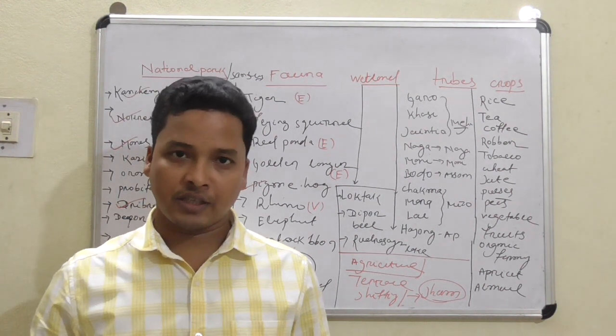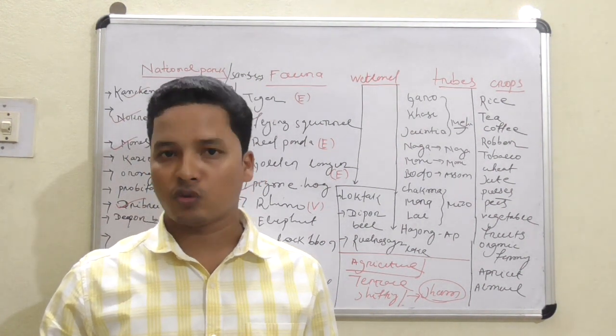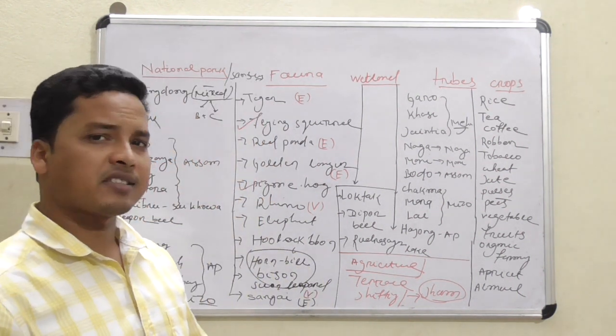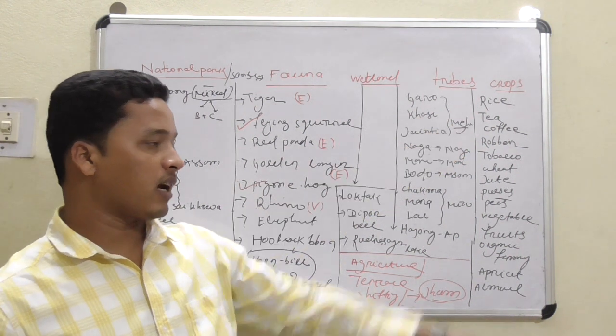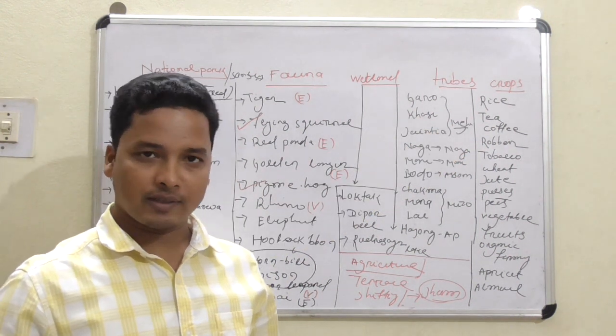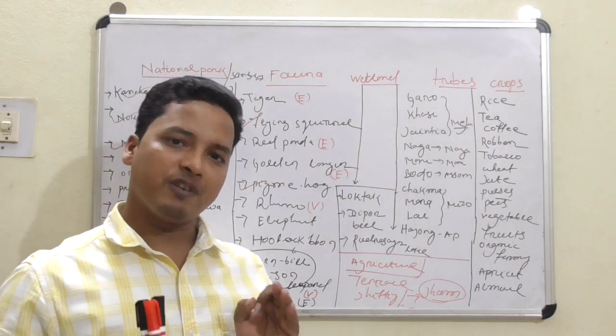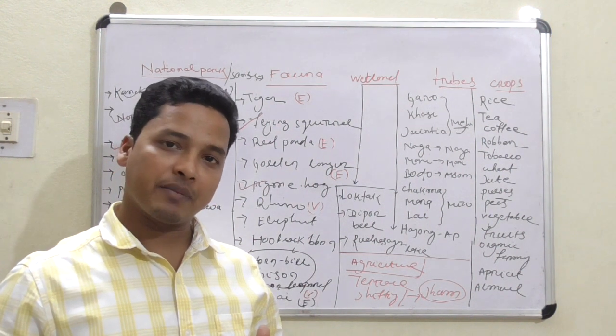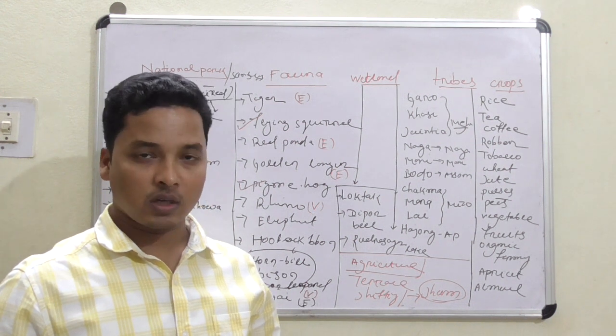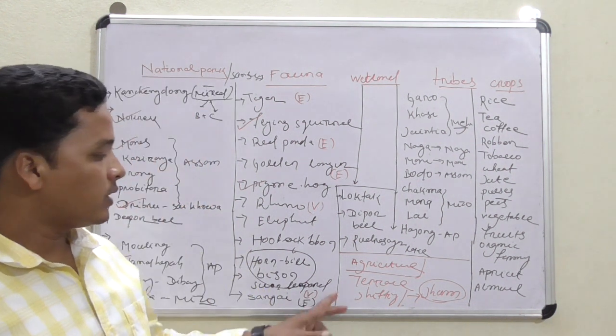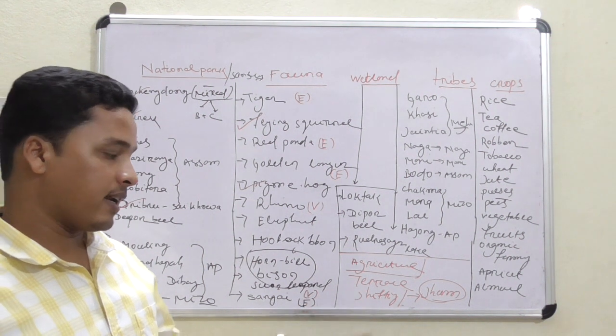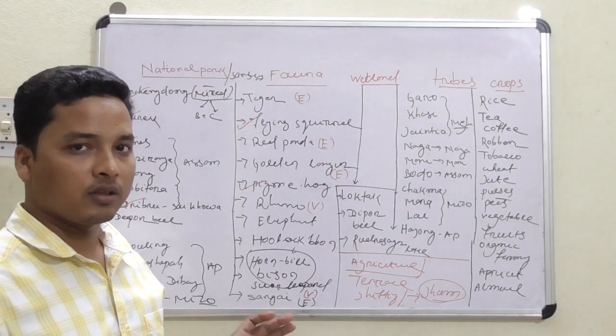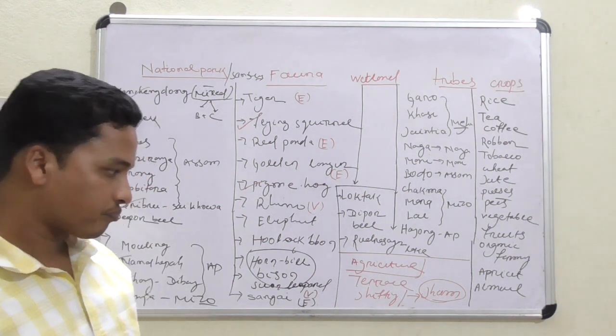In the first part of Northeast India, we discussed mountains, rivers, etc. Today we will discuss crops cultivated in the Northeast India. But before that, I will explain what is shifting cultivation. The shifting cultivation in Northeast is known as Jhum cultivation.